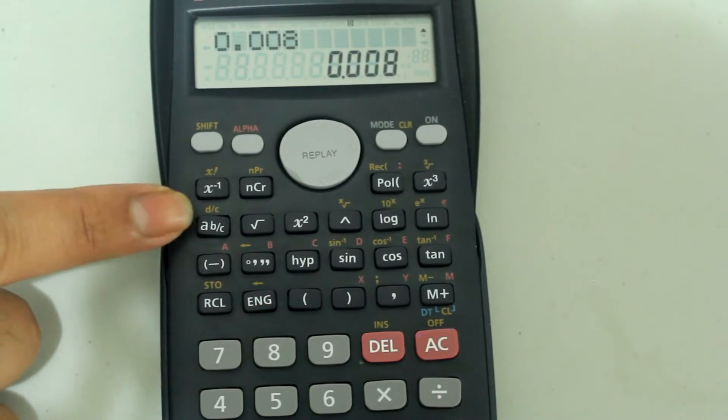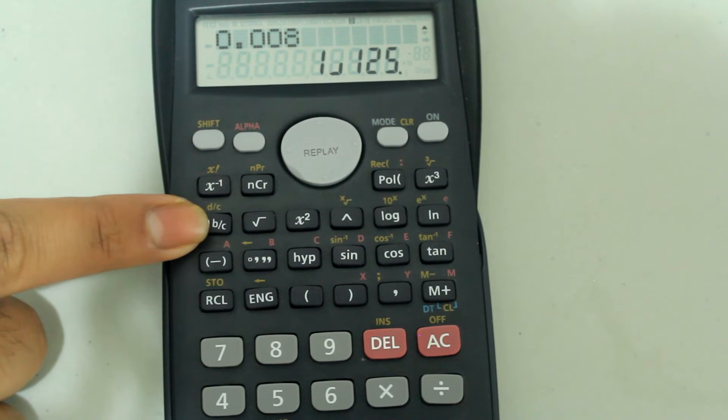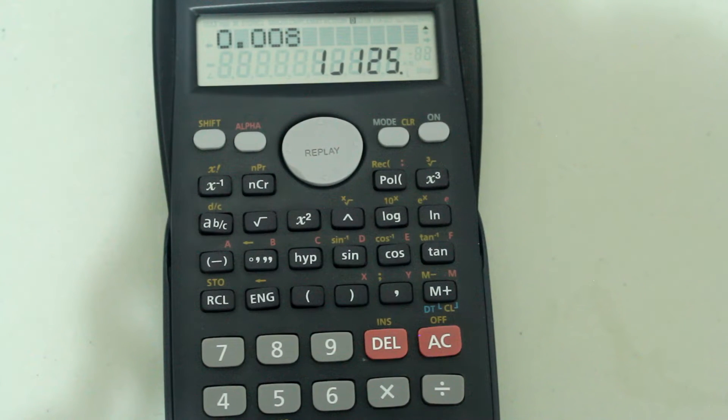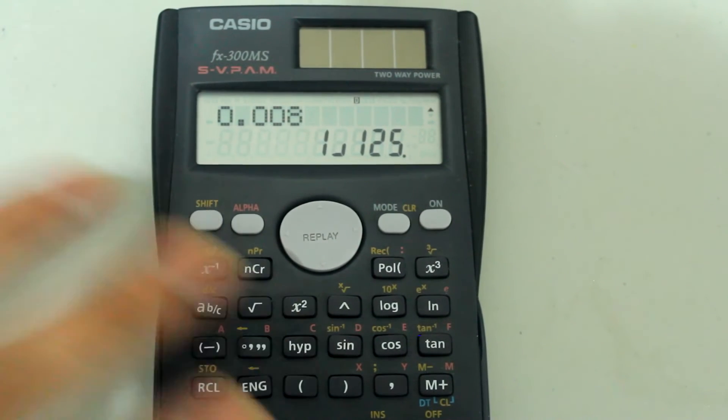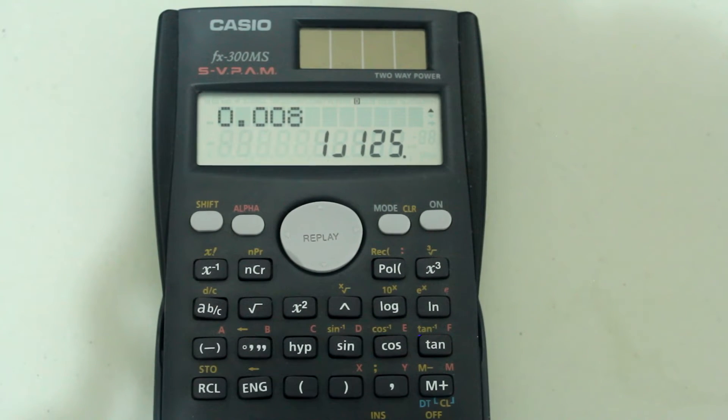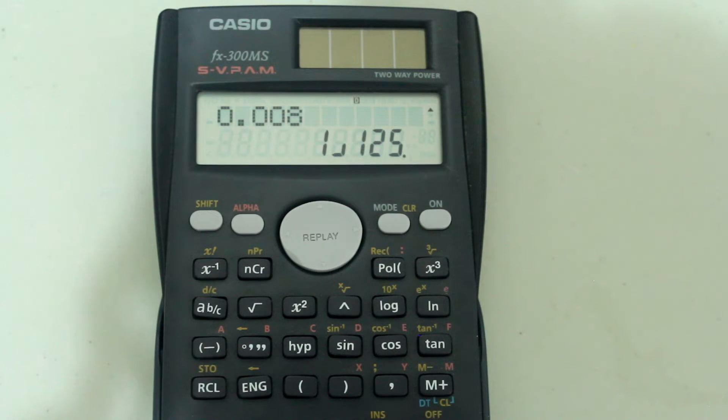and then I press the fraction button, I get 1 over 125, which is the fraction equivalent of the decimal. So that's a nice feature to use for decimals that have a nice equivalent fraction.